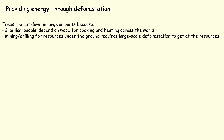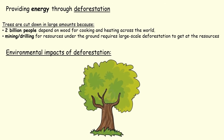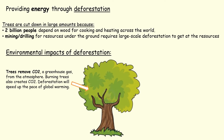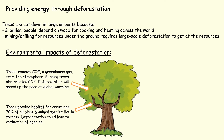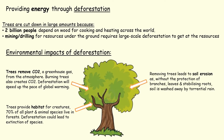Providing energy through deforestation. Deforestation is the cutting down of trees, and 2 billion people worldwide depend on wood for cooking and heating. We also clear large areas of forest to get at the minerals underneath for mining and drilling. Problems of cutting down trees: firstly, trees absorb CO2, a greenhouse gas, so removing them speeds up the pace of global warming. Secondly, trees are a habitat — 70% of all plant and animal species live in forests, so cutting them down could lead to extinction of species. Removing trees also leads to soil erosion, and trees intercept rainfall, so removing them makes flooding more likely.